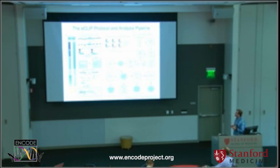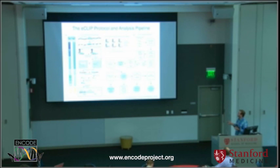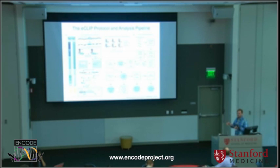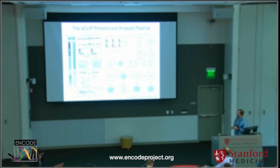As far as the genomic assays go, Eric Van Nostron introduced this in the workshop the other day — this is the eCLIP assay that he developed. It's a really high-throughput assay that's great at identifying protein-RNA interactions that occur in vivo. I won't go through this in much more detail since Eric spent the whole workshop on it.